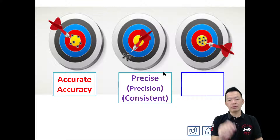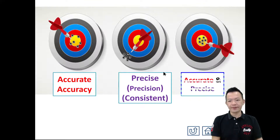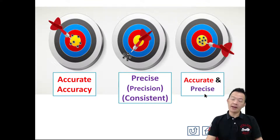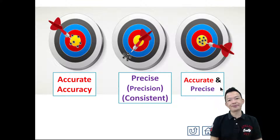The last one will be the best: accurate and precise. It is both on target and consistent. Having both accuracy and precision — that's what we call accurate and precise.